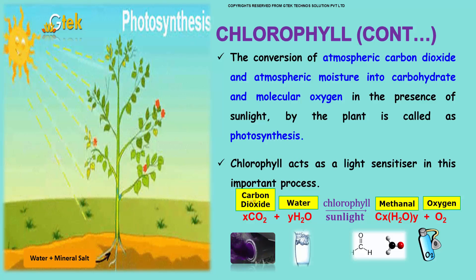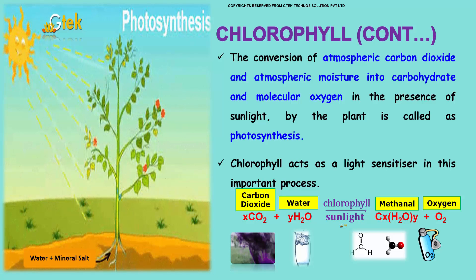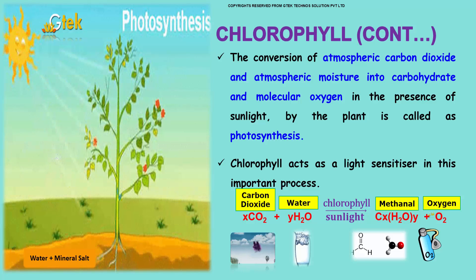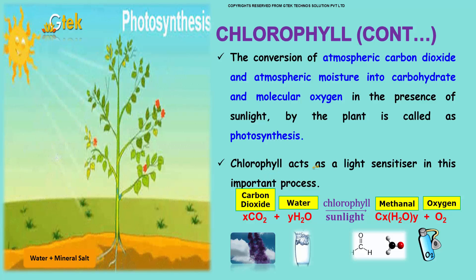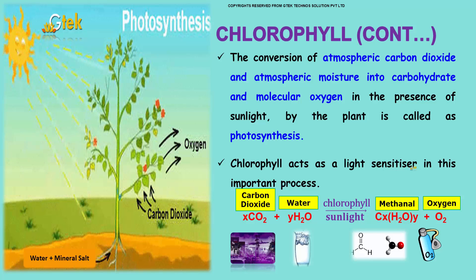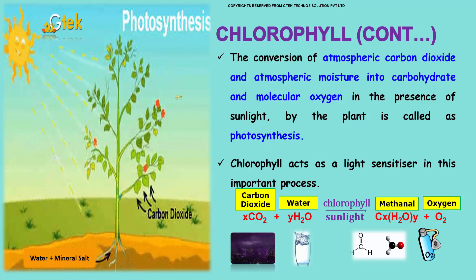Carbon dioxide, water, and sunlight — in the presence of chlorophyll — give glucose and oxygen. Chlorophyll acts as a light sensitizer in this very important process.